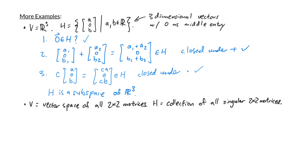In our next example, V is the vector space of all 2×2 matrices. You can verify that 2×2 matrices with matrix addition and scalar multiplication form a vector space satisfying all the conditions. H in this example is the collection of all singular 2×2 matrices — singular meaning non-invertible. We want to determine if H is a subspace of V.